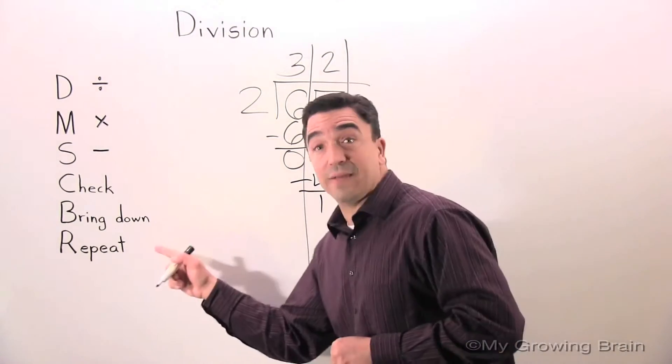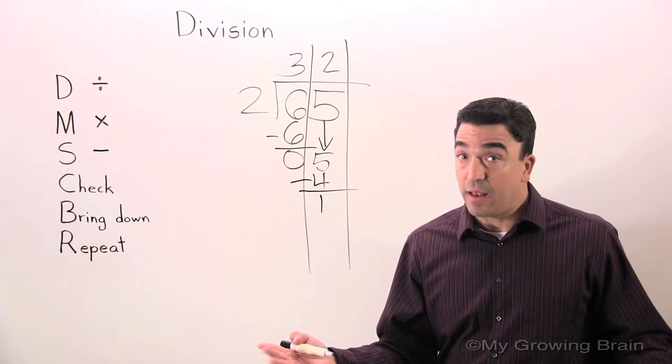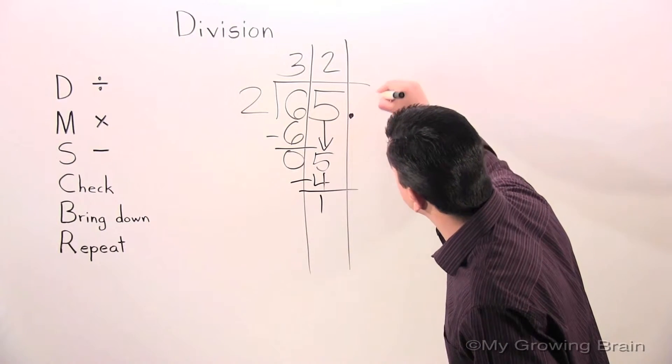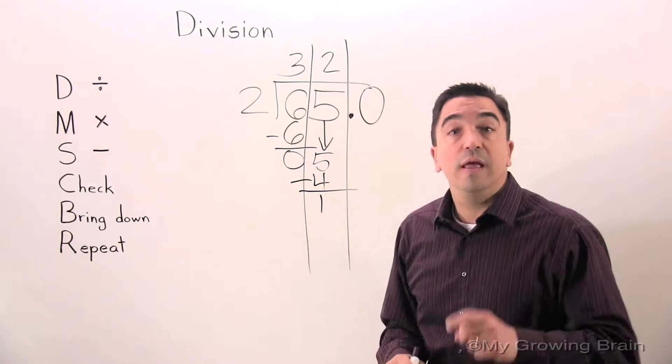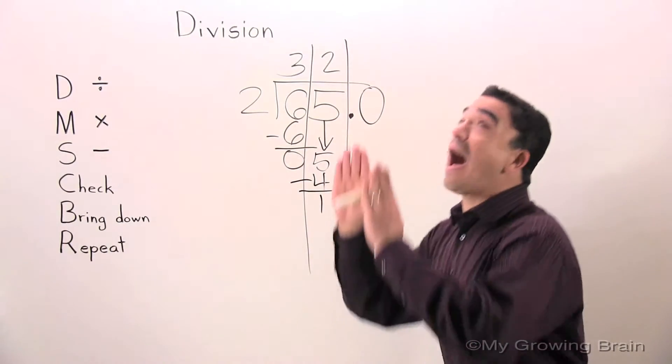Now, the next step is bring down, but there's nothing to bring down. And I told you, we're not going to have a remainder today. Therefore, we're going to put a decimal and a zero. Now, once again, the decimal that's in the dividend must rise.